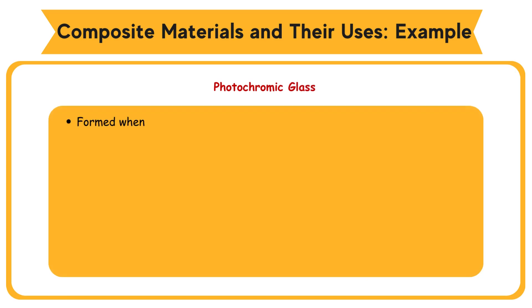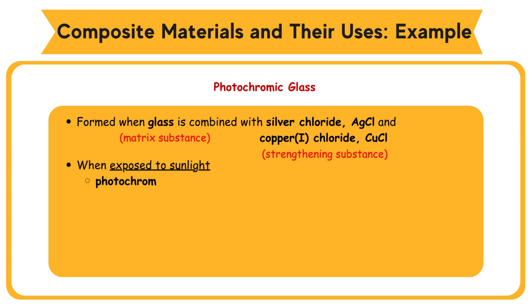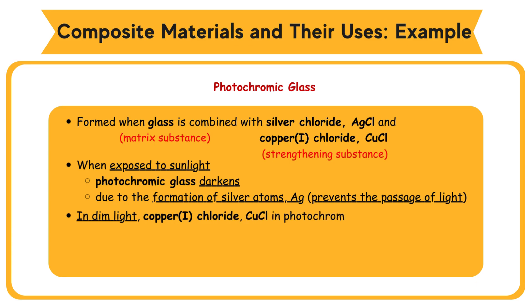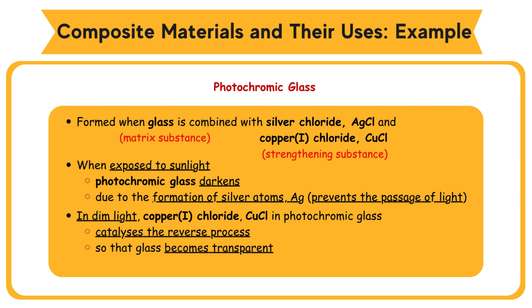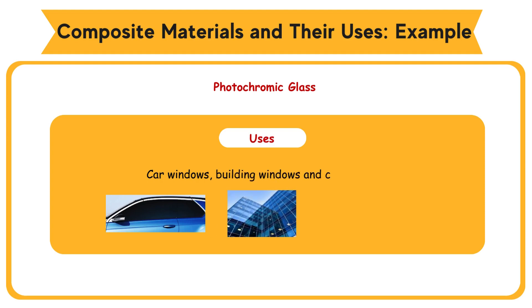Photochromic glass is formed when glass (matrix substance) is combined with silver chloride (AgCl) and copper(I) chloride (CuCl) as the strengthening substance. When exposed to sunlight, photochromic glass darkens. This is due to the formation of silver atoms (Ag) that prevent the passage of light. In dim light, copper(I) chloride (CuCl) catalyzes the reverse process so that the glass becomes transparent again. Photochromic glass protects the user from UV rays. Uses: car windows, building windows, and camera lenses.